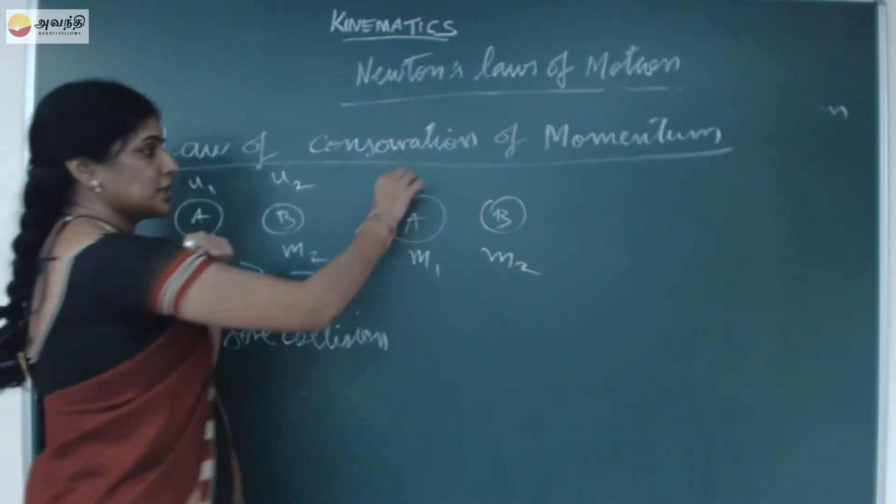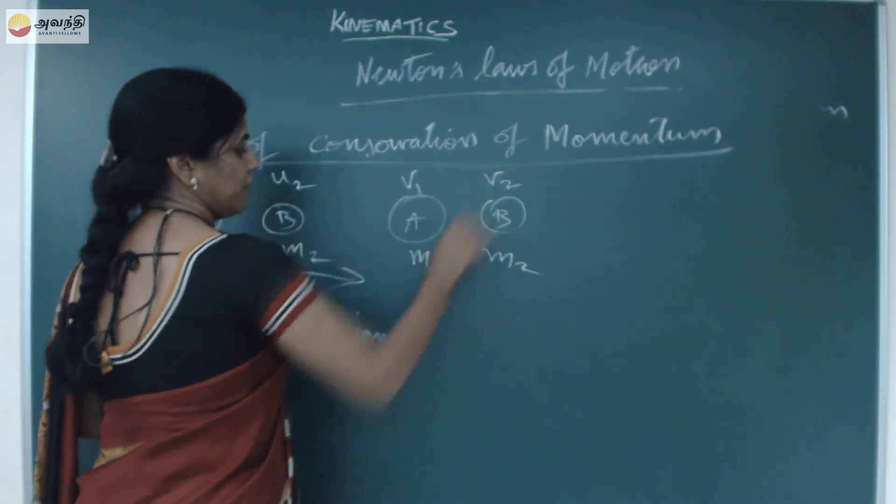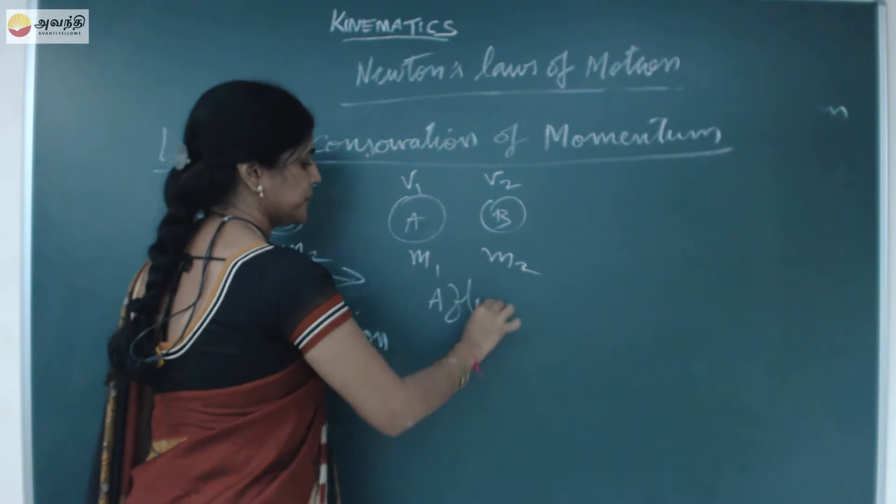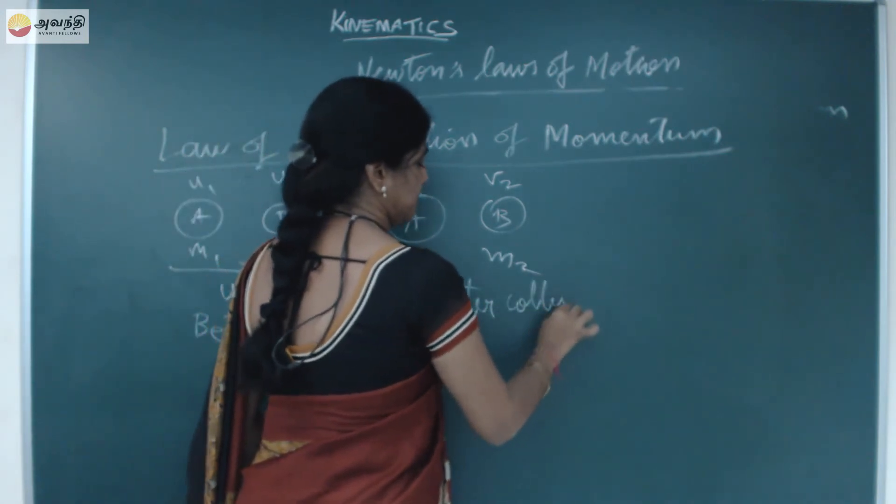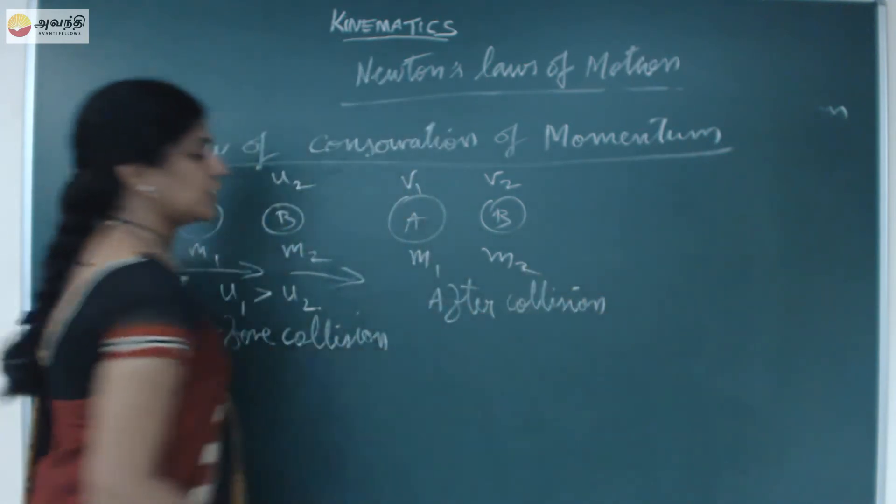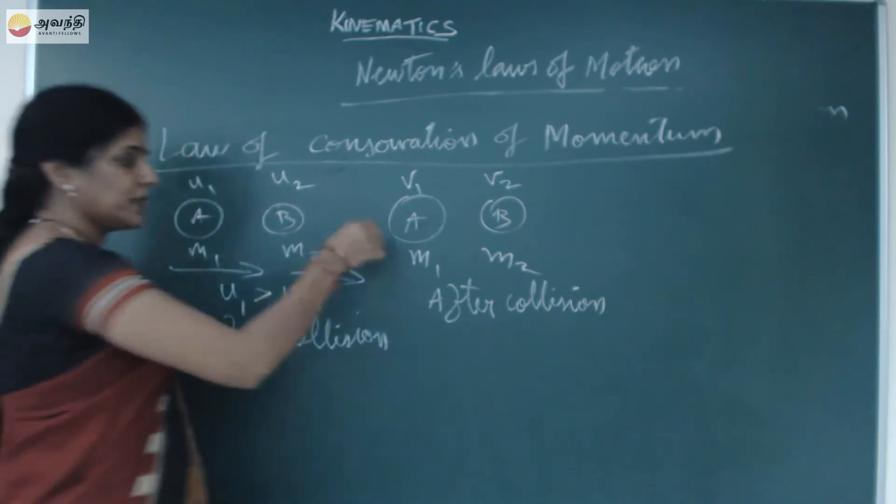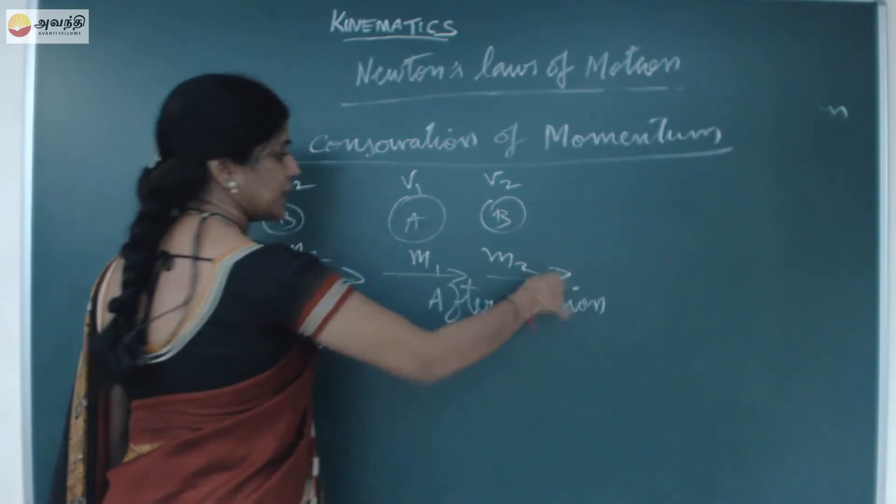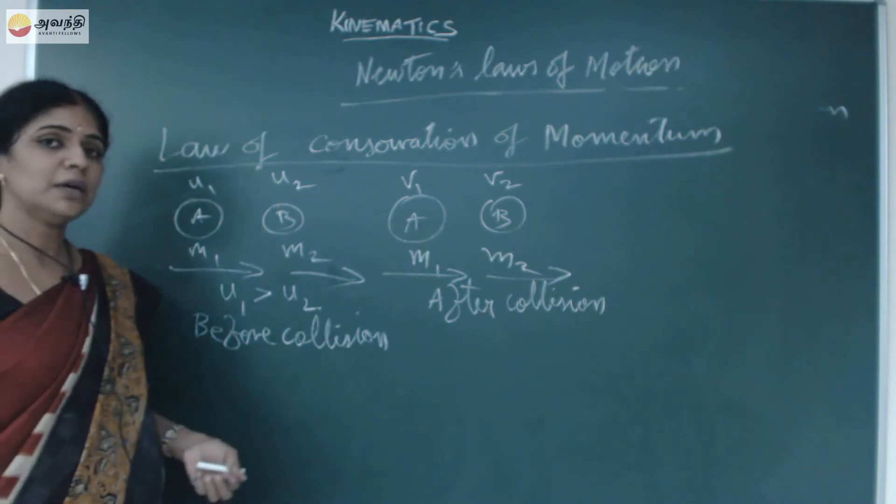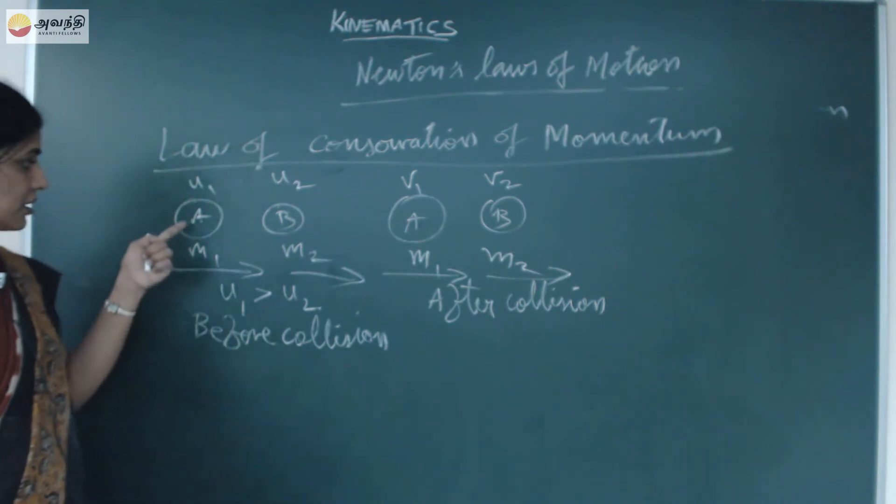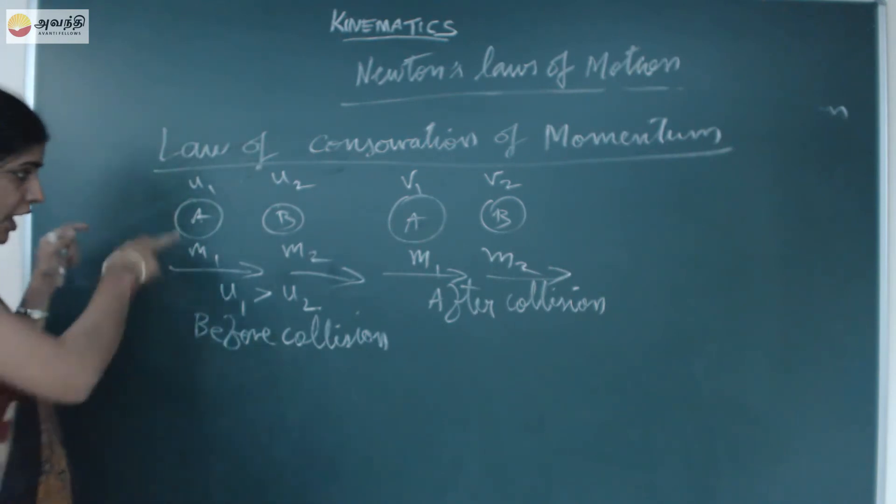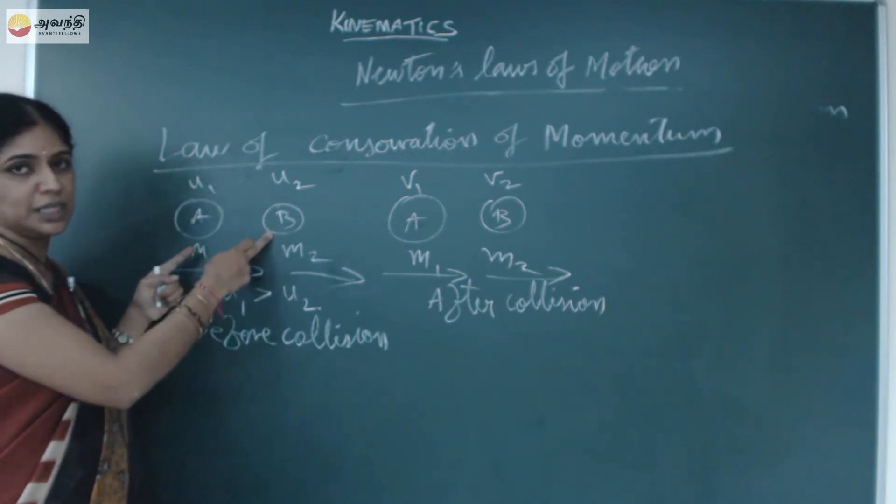Let that be v1 and v2. This is after collision. Before collision, velocities are u1 and u2. After collision, they are moving in the same direction with different velocities v1 and v2. Now I want to find out what is the force acted on this object A by B, and what force A and B exert on each other.